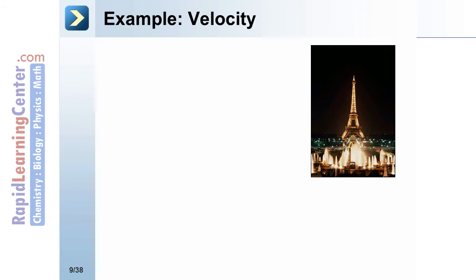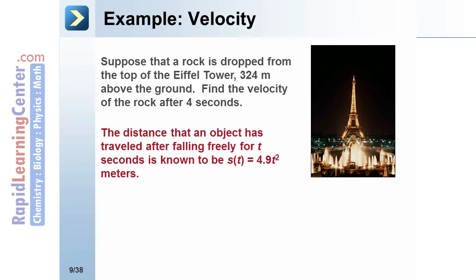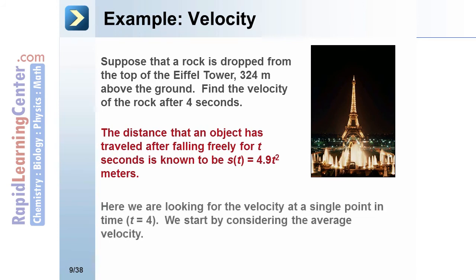Let's take a look at another velocity example. Suppose we're going to take a rock and drop it from the top of the Eiffel Tower, which is 324 meters above the ground. Our goal is to find the velocity of the rock after 4 seconds. The distance that an object has traveled after falling freely for t seconds is known to be s(t) = 4.9t² meters. Here we are looking for the velocity at a single point in time, t = 4.